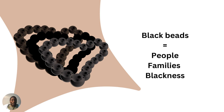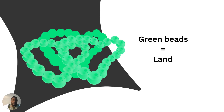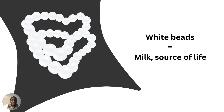Black, for example, represents people. It represents humanity. It represents families. The color orange represents community — it represents hospitality and generosity. The color green represents land. The color white represents milk, which is the source of life.